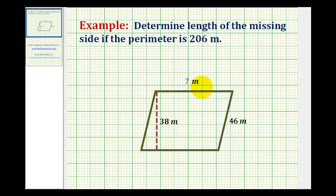We want to determine the length of the missing side here if we know the perimeter is 206 meters. We're given a parallelogram and one of the properties of a parallelogram is that the opposite sides are congruent or equal in length. So if this side here has a length of 46 meters, this side here is also 46 meters.